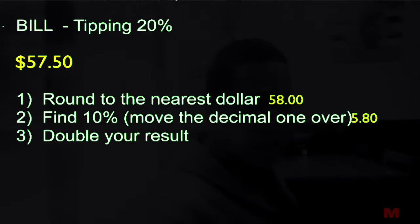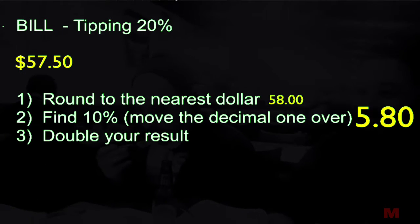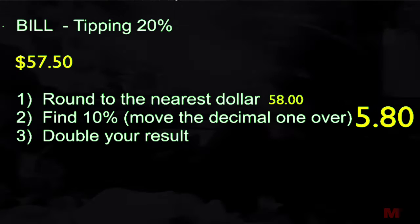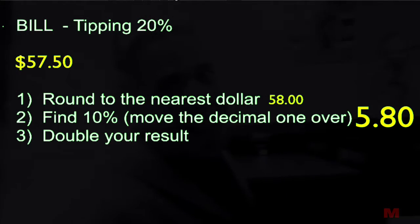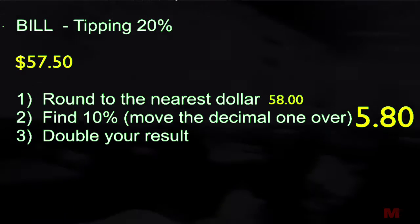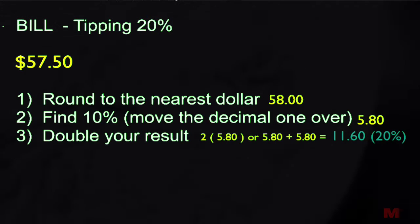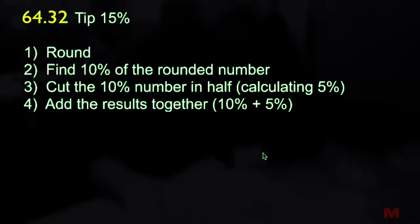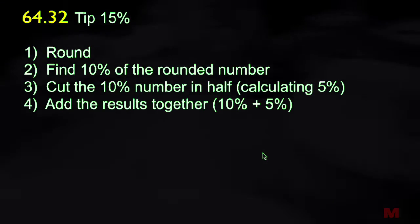The last step to calculate 20%: all I have to do is double this number — I'm just doubling 10%. So if I double $5.80, I can add it to itself or do $5.80 times 2. You can do that in your head and you get $11.60.